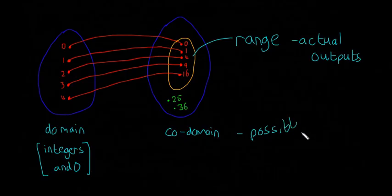And this is going to be possible outputs. So the difference is that for this function here, 25 and 36 don't go into it. So that means they're not in the range because they're not actual outputs. But they are possible outputs if we put other inputs in.